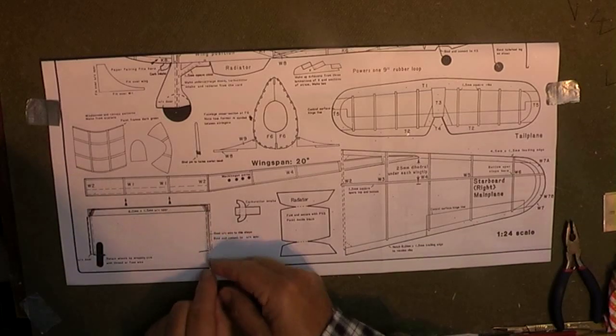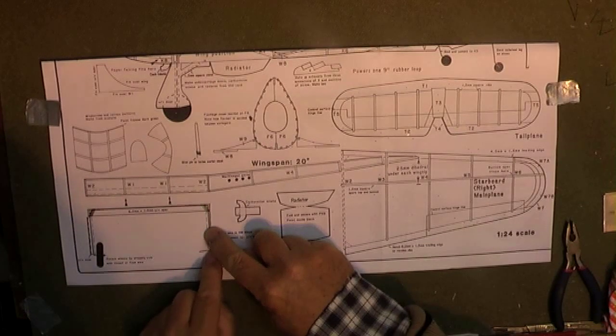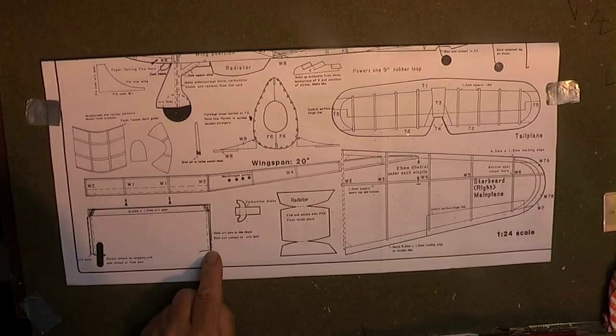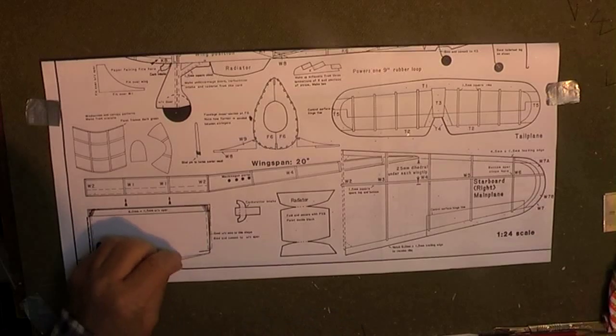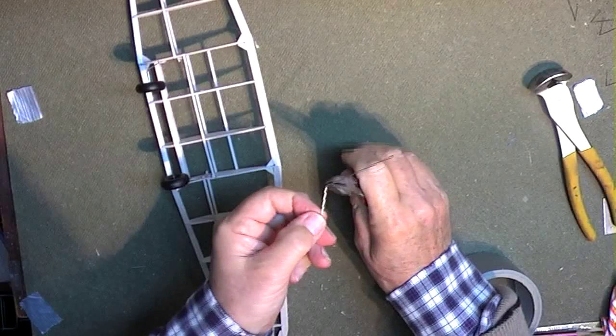Next, I continue with my idea to modify the undercarriage. First, I measure and bend wire for the two main legs and slot them into the forward sockets.